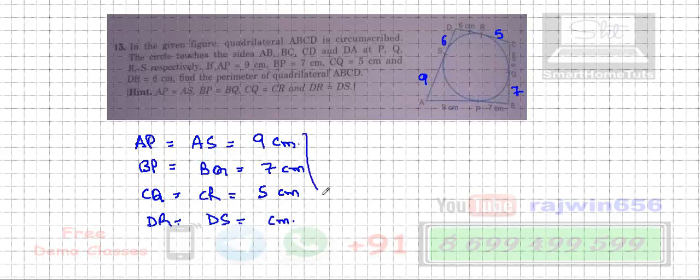So here you will write that common statement: tangents from an external point are equal in length. Then you are going to write AD will be equal to AS plus DS. Same way, BC is equal to DR plus CR. Then BC is equal to BQ plus CQ, and finally AB is equal to AP plus BP.